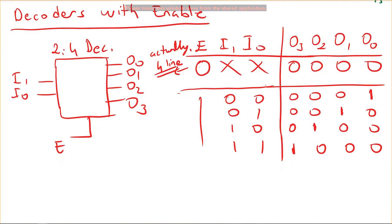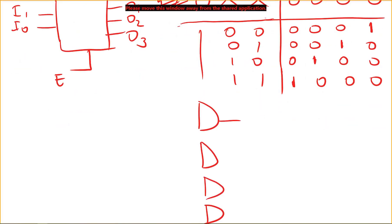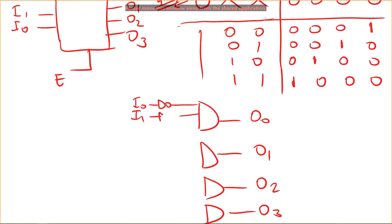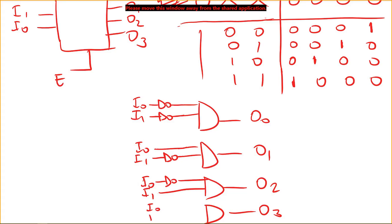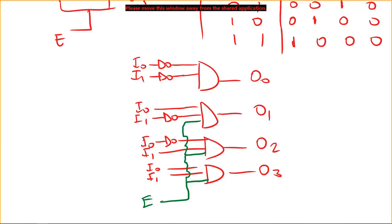To implement this circuit, we use four AND gates for outputs zero through three. Output zero gets i0-NOT and i1-NOT; output one gets i0 and i1-NOT; output two gets i0-NOT and i1; output three gets i0 and i1. Each AND gate is also controlled by the enable signal. If enable is zero, all outputs are zero. If enable is one, the decoder operates as normal.